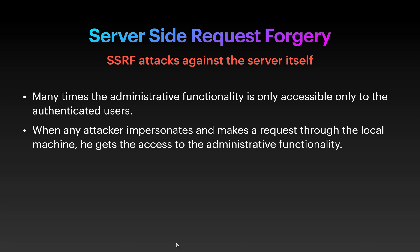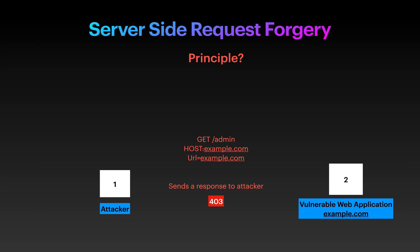Many times the admin functionality is only accessible to authenticated users of the target program or web application. So when an attacker impersonates and makes a request through the local machine, he gets access to the admin functionality. This means that the attacker is going to fool the application and make it think the request is coming from the organization itself, and the application will allow admin functionality to all its local users. To understand this, we are going to see a simple animation.